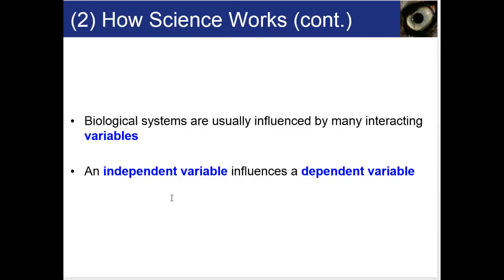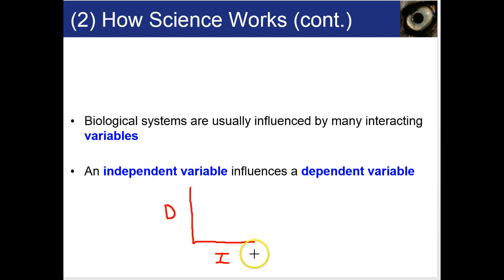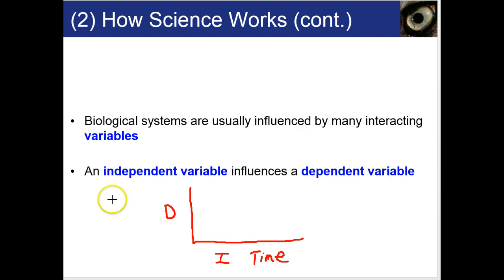Biological systems are usually influenced by many interacting variables. The independent variable influences a dependent variable. On a graph, the independent variable usually goes on the x-axis (bottom) and the dependent variable goes on the y-axis. For instance, time is a very common independent variable. In a plant experiment, we might look at height of plants over time — time is the independent variable and height is the dependent variable.